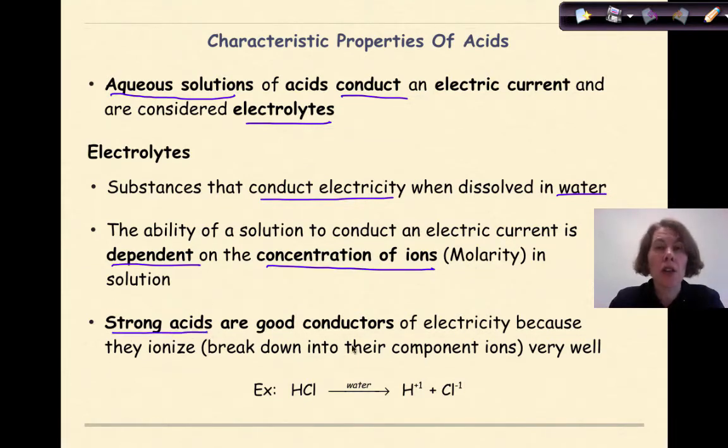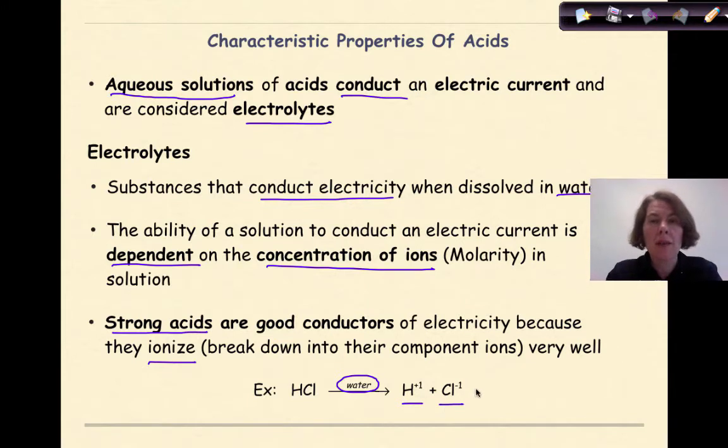Strong acids are good conductors of electricity because they ionize, in other words they break down into their component ions, their individual ions, very well. And the example that we see down here is hydrogen chloride. When it is dissolved in water, which is why we have water over the arrow right here, it will fully ionize into hydrogen ions and chloride ions.